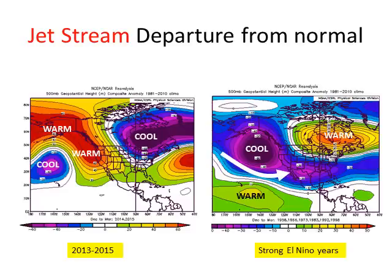Comparing the departure from normal of our jet stream across the Pacific in the past two years, there's a huge ridge of upper-level high pressure and a lot of cool air across the northeastern part of the atmosphere. But in strong El Niño years, that gradient shifts southward — the battle zone becomes between the tropics and the polar jet stream, focusing most of the energy across Southern California and Texas. This is a dramatic difference from past strong El Niños and explains why we're in such a severe drought.